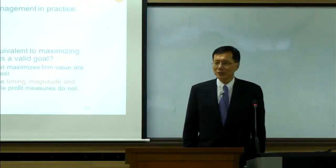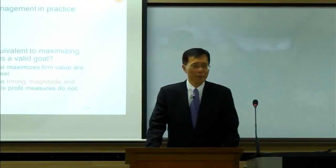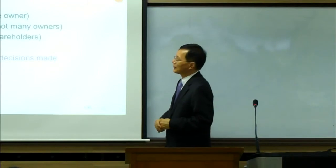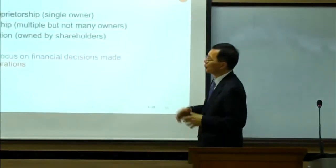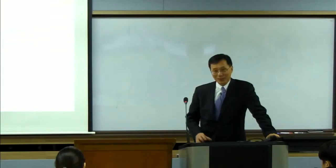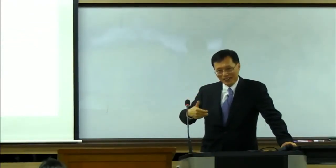Regarding forms of business organization, there are three: proprietorship, partnership, and corporation. Read the advantages and disadvantages of each, including the agency problem — where management maximizes personal utility rather than firm value.